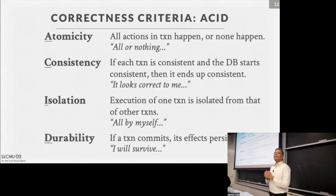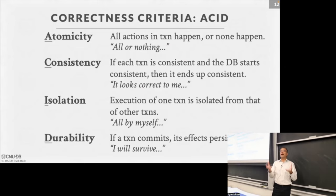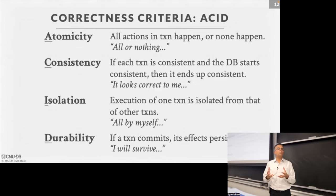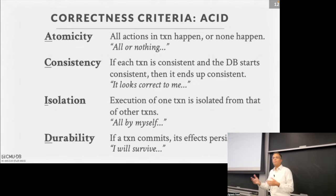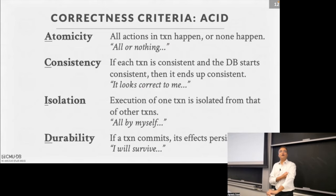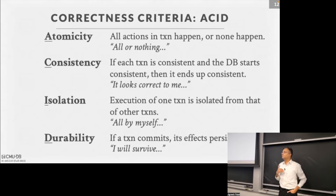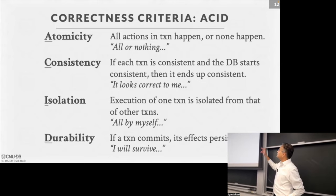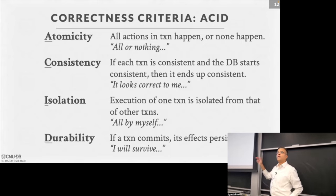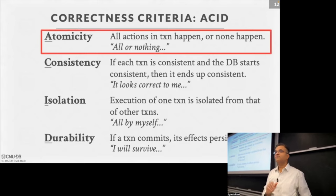Many of you might have heard of ACID — a cool acronym the community came up with to describe the properties we want of transactions. The properties are Atomicity, Consistency, Isolation, and Durability.